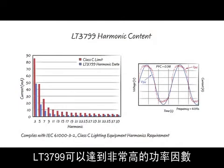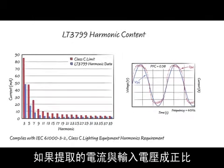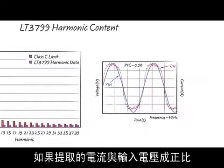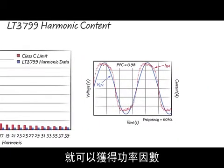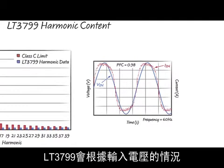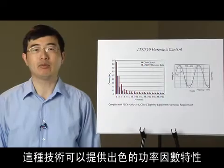A power factor of 1 is achieved if the current drawn is proportional to the input voltage. The LT3799 modulates the peak switch current with a scaled version of the input voltage. This technique provides excellent power factors.